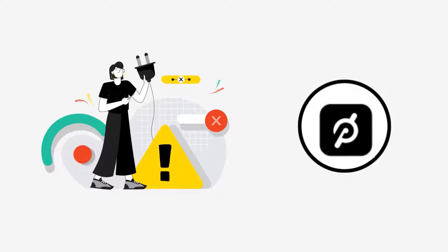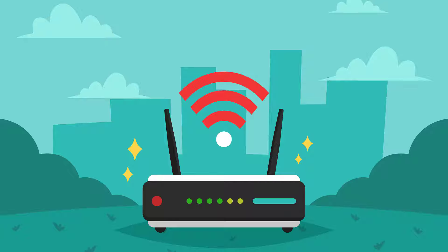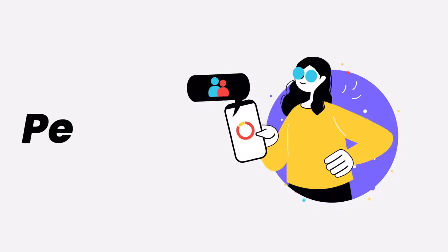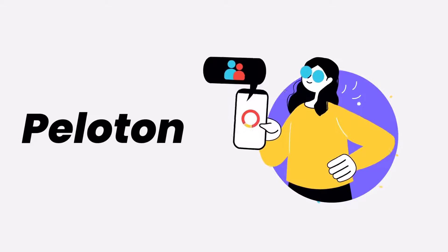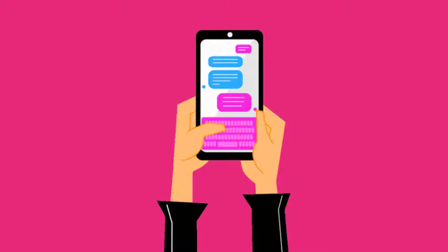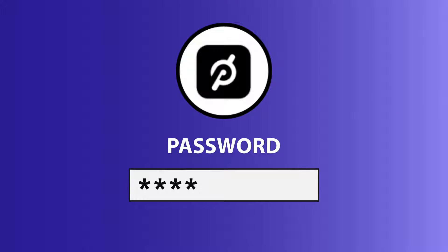It might be possible that you're not able to log in due to a connectivity issue. First of all, you need to make sure you have a strong and stable internet connection. Do a quick test by opening an app that runs on the internet, other than the Peloton mobile app, and check if it's working. You can also try switching from Wi-Fi to mobile data and vice versa.